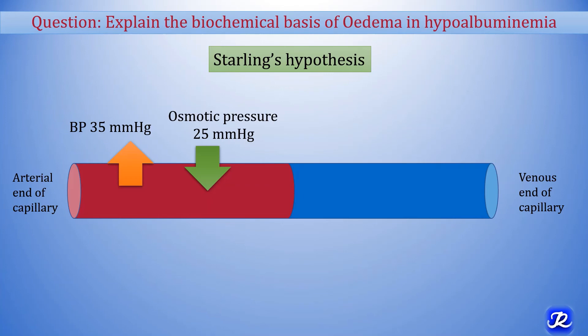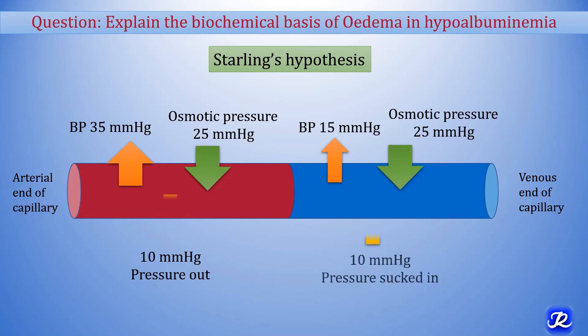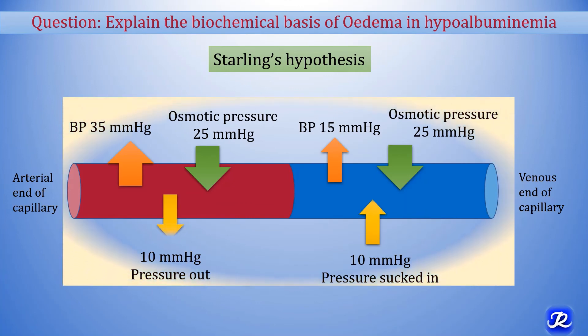At the arterial end of the capillary, blood pressure is 35 mmHg and effective osmotic pressure is 25 mmHg, so water is expelled with a net pressure of 10 mmHg on the capillary side. The water escaping out from the arterial side is exactly equal to the volume returning at the venous side, and therefore blood volume remains the same.